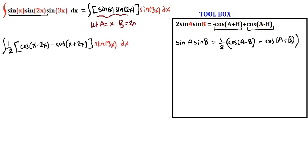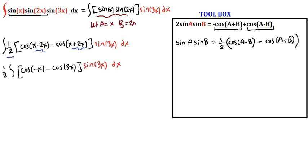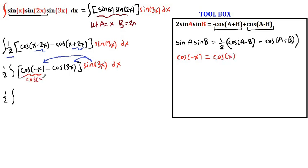Now let's simplify the angles and pull one half in front of the integral sign. So it will be one half times cosine of negative x minus cosine of 3x, and we have sine of 3x outside. Now we distribute sine of 3x into the parenthesis. We also know that cosine of a negative angle equals cosine of the positive angle, so we can switch this to cosine of x. So we have cosine x times sine 3x minus cosine 3x times sine 3x.